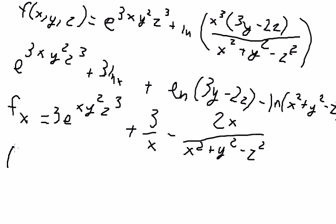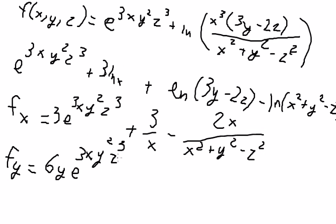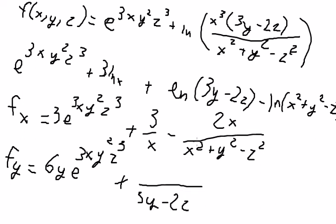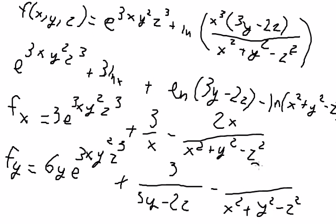Now let's go to Fy. Here, y will be the variable and x and z will be the constants. We have 3y squared, so the derivative gives 6y. We have 3x·y squared plus z to the power of 3. This term gives number 3. We have a variable here, so we get 3y minus 2z. We do the first derivative of 3y, giving us number 3. We have a negative, and the first derivative of the denominator term gives 2y.